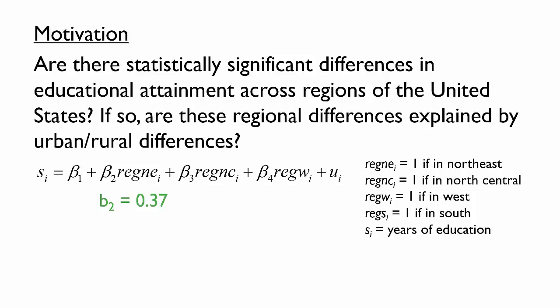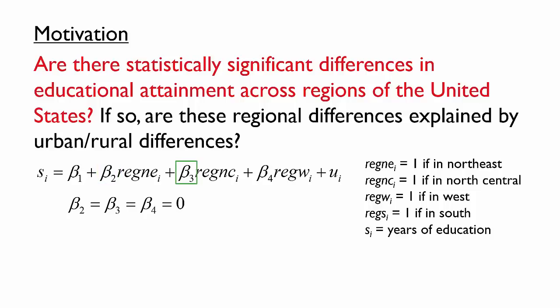With this interpretation in mind, think about how to write a hypothesis to answer the first question: are there statistically significant differences in years of education across regions of the United States? If the answer is no, then Beta-2, Beta-3, and Beta-4 are all zero. Beta-2 equals zero means there is no difference in average schooling between the Northeast and the South. Beta-3 equals zero means no difference between the North Central region and the South, and Beta-4 equals zero means no difference between the West and the South. If these regions do not differ from the South, then none of the regions differ from one another. This makes a good null hypothesis, and we can write down a consistent alternative hypothesis.